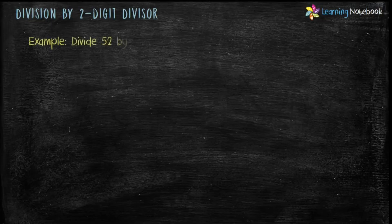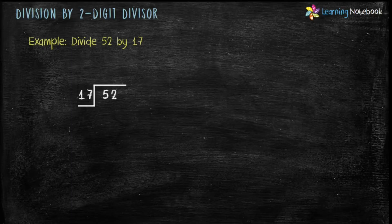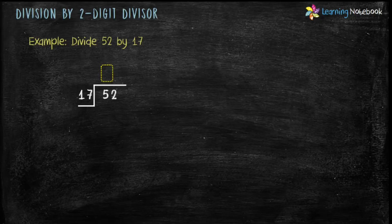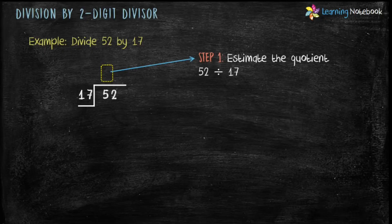The question is: divide 52 by 17 using the long division method. Let's solve it. Form a tent and put the dividend inside the tent and the divisor outside the tent. Now divide 52 by 17. The question is: which number should we multiply by 17 to get the nearest multiple to dividend 52? For this, we will do 2 steps. Step 1 is to estimate the question, and step 2 is to find the actual question.